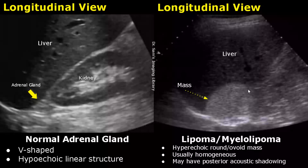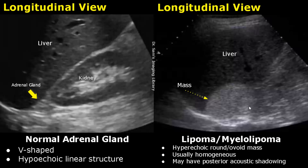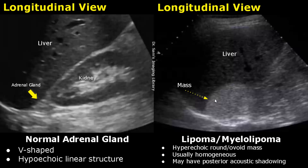Lipoma and myelolipoma are benign tumors. A lipoma consists of fat tissue, which is why it appears as a hypoechoic mass. A myelolipoma consists of fat and bone marrow — these masses are usually hyperechoic, well defined, and round or ovoid in shape. If these masses are very dense, they may cast a posterior acoustic shadow.